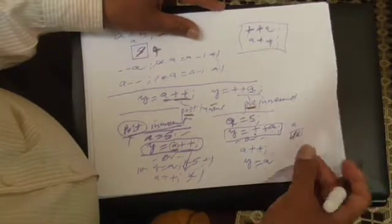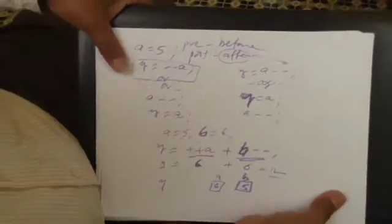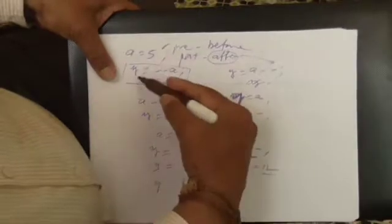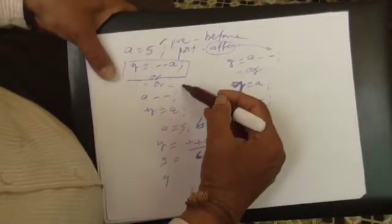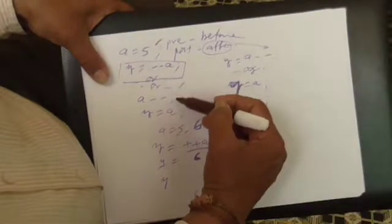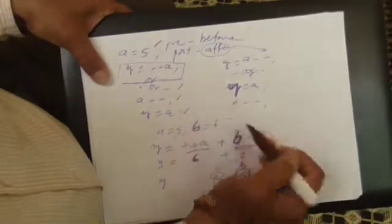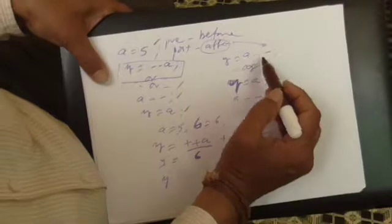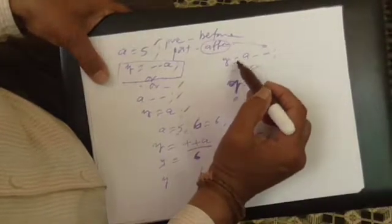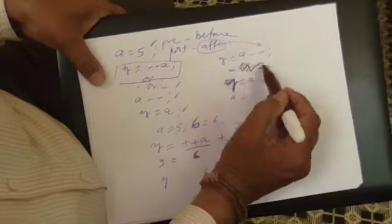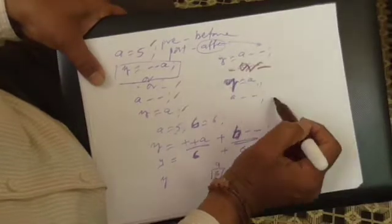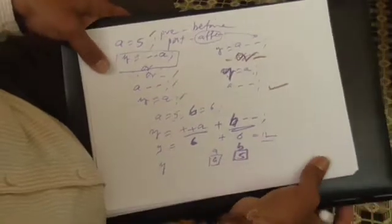Similarly, you have a decrement operator which works in the same fashion. If A is 5 and you write Y = --A, it is called a pre-decrement — first A is decreased, then the value of A is assigned. If you write Y = A--, it is a post-decrement: first Y becomes A, then the value of A is decremented by 1.